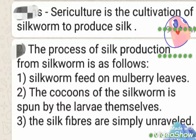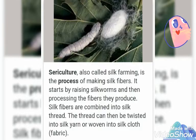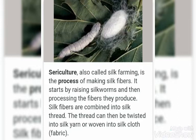Pay attention kids — mulberry leaves or mulberry silkworm take up 90% of the silkworm population in the world. So mulberry silkworms eat mulberry leaves. The cocoon of the silkworm is spun by the larvae themselves. The larvae is the next stage, as you will see in the diagram. The silk fibers are obtained from the cocoon of the silkworm.